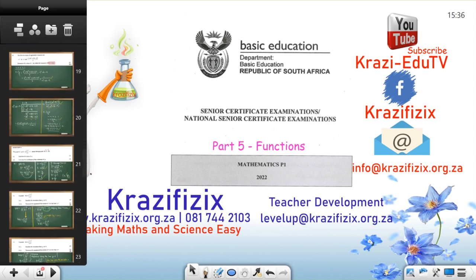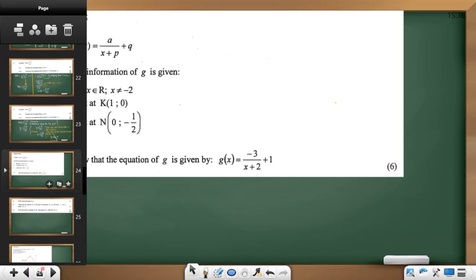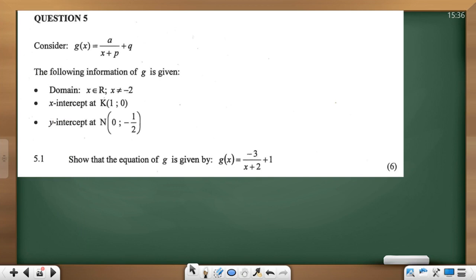We are looking at question 5. We've really created a long memo here. Let's look at question number 5. It says, consider g of x written as a over x plus p. You can see this, that this is a hyperbola. Let's look at all this information that we are given. Very important information that the examiner is throwing at us here. The first one that we see is that this examiner said the domain, x is an element of real numbers, but x should not be equal to negative 2. That means a lot.